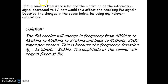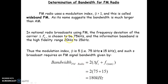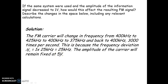In the next problem, using the same system, the amplitude of the information signal decreases to 1 volt. The FM carrier remains centered at 400 kilohertz with no change in center frequency. However, the frequency deviation changes because it depends on the modulating signal amplitude. The rapid frequency changes correspond to the peak of the modulating signal, but the amplitude of the carrier signal remains at 5 volts.